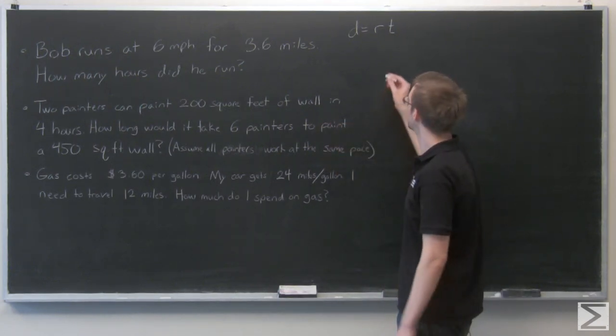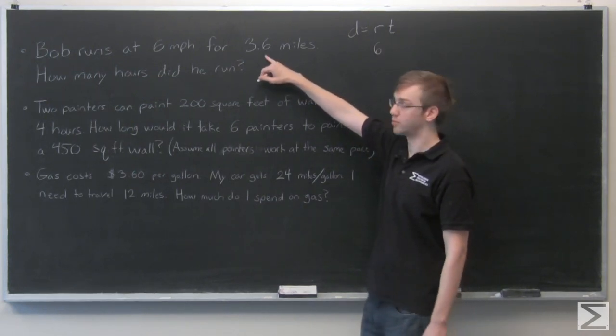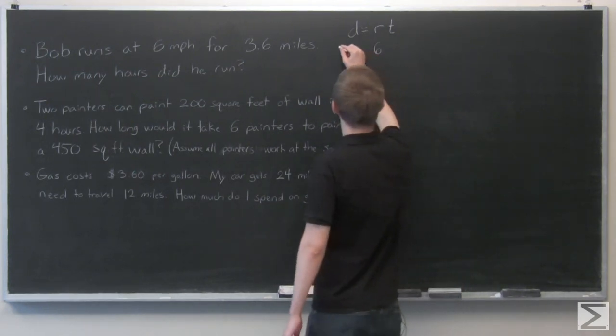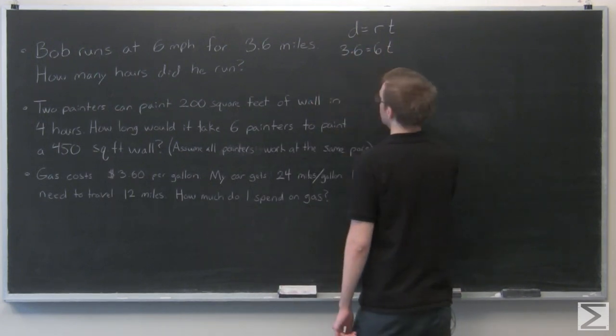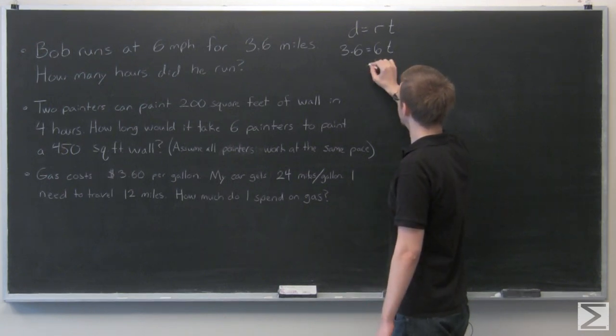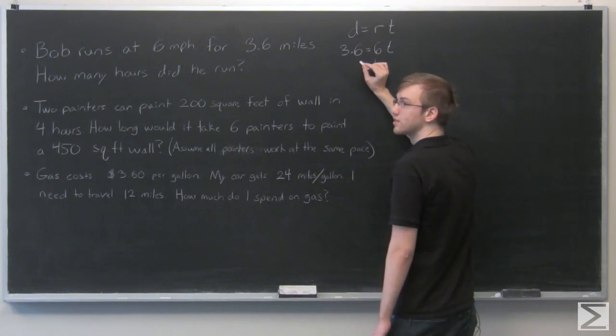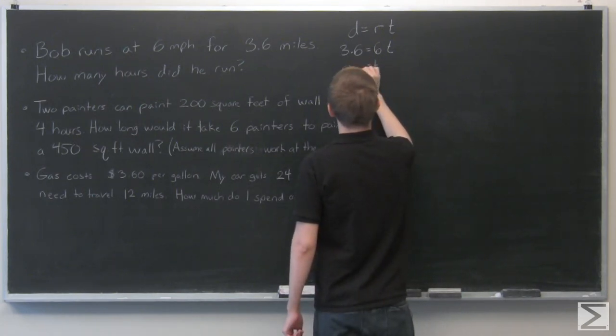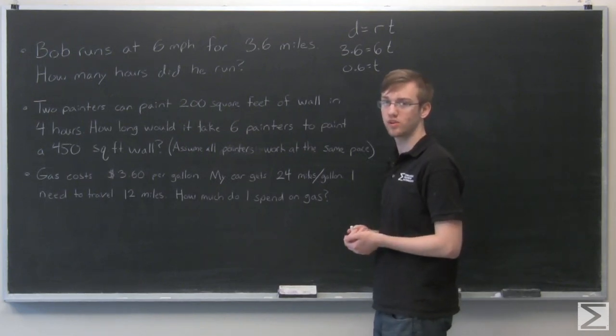D equals RT. So our rate is 6 miles per hour and our distance is 3.6 miles. So to solve for time T, we just need to divide both sides by 6. And 3.6 over 6, that's going to give us 0.6.